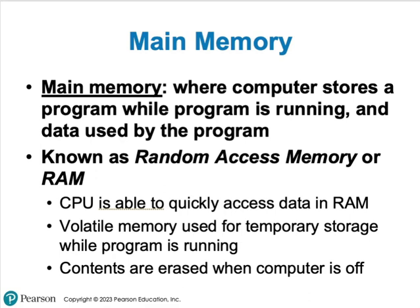RAM is referred to as volatile memory. What volatile memory means is: if you remove power and reapply power, everything is gone — it does not save anything. Non-volatile is the opposite: you can turn the power off, turn it back on, and the data is still there.